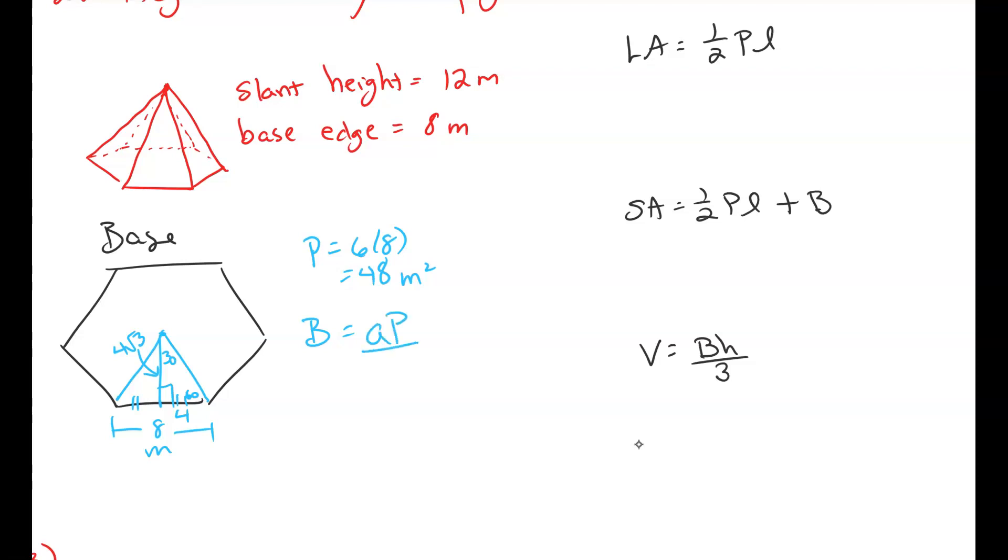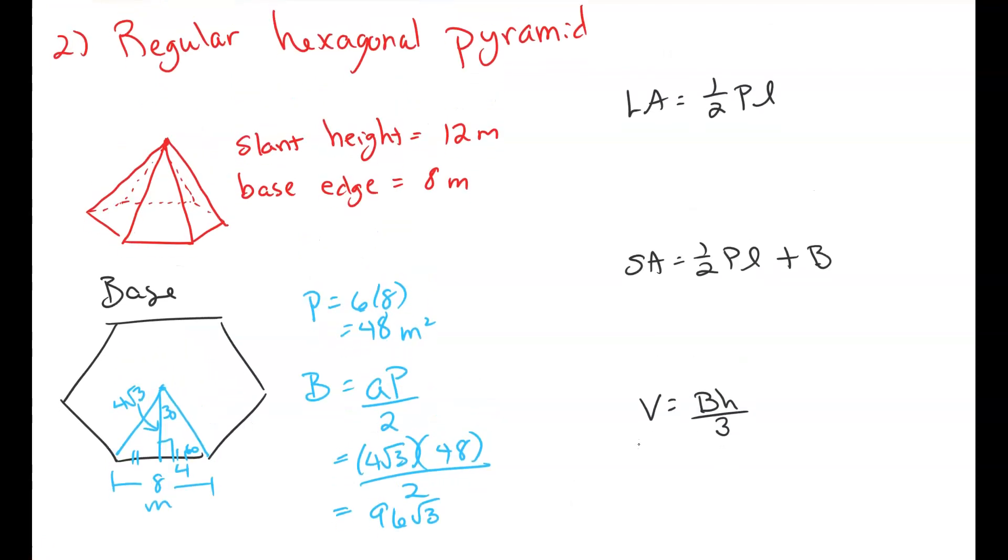Apothem times perimeter all over 2. Our apothem is 4 root 3. Our perimeter is 48. All over 2, I get 96 root 3 is going to be the area of our base. So let's go ahead and calculate lateral area and surface area with this. So 1 half the perimeter of the base, which is 48, our slant height.